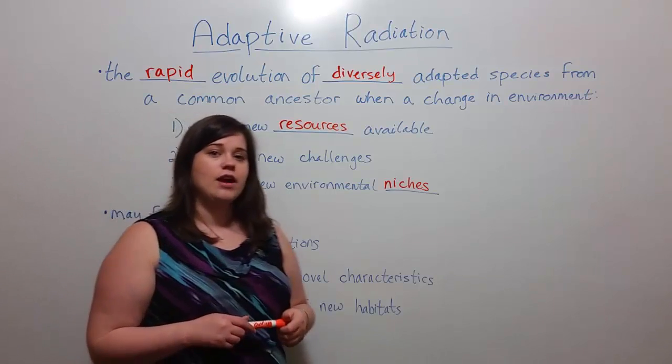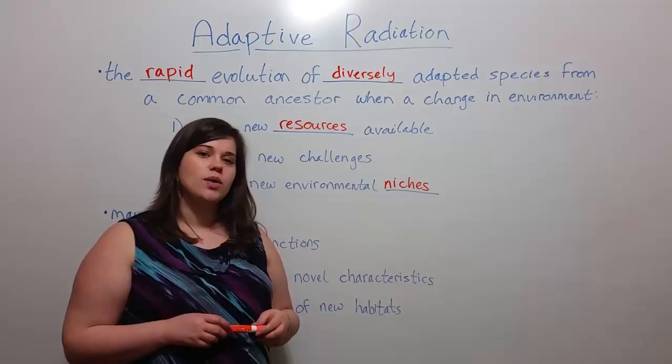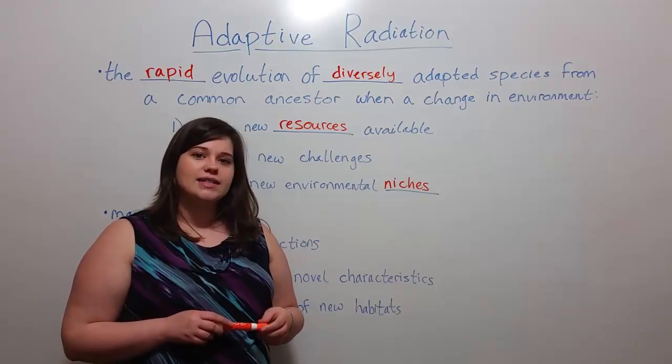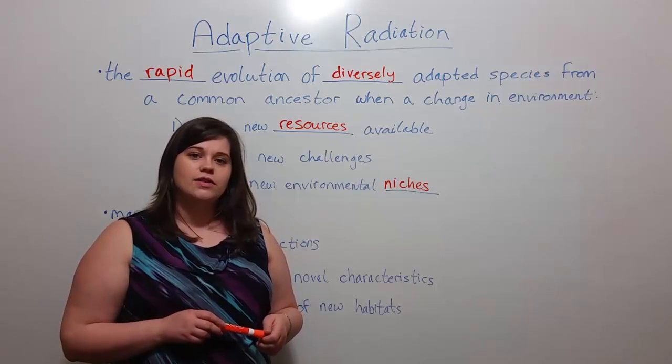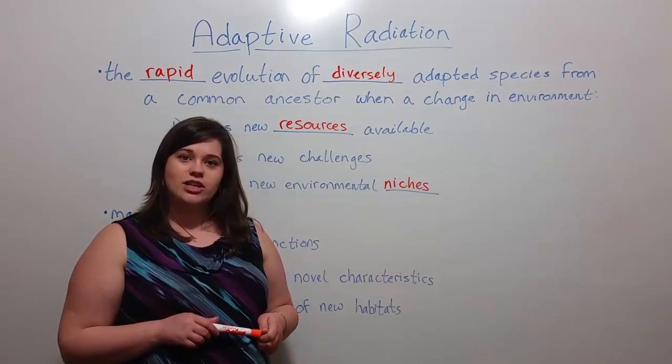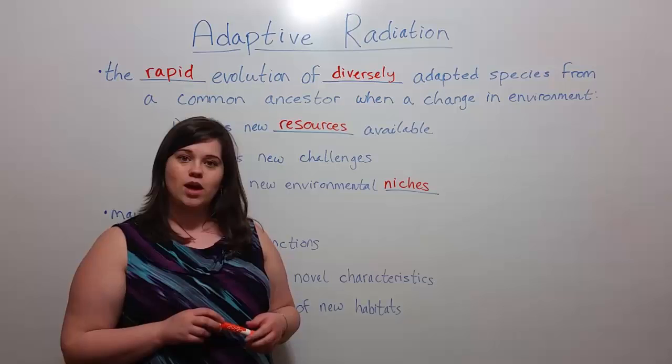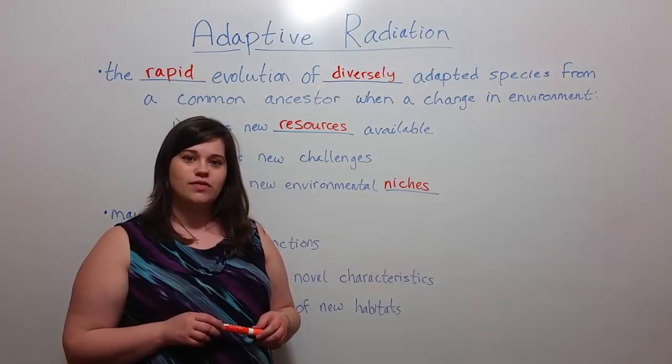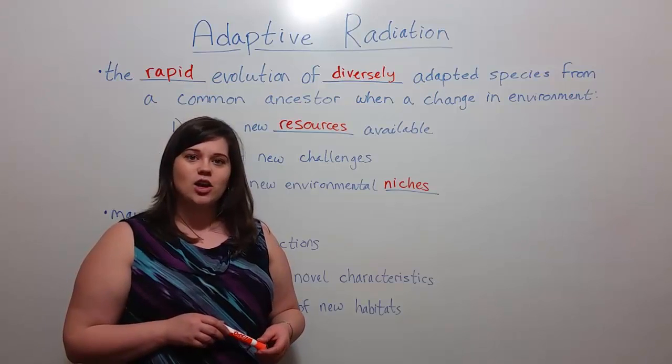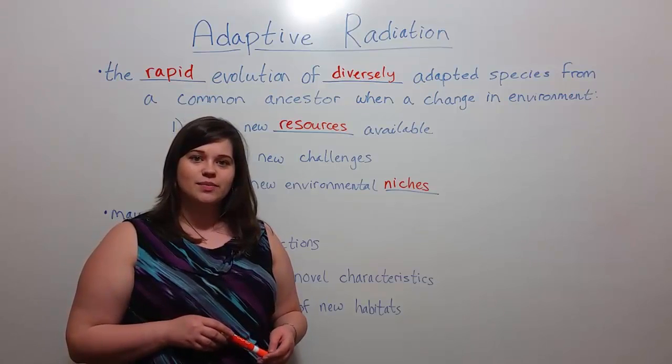So the take-home point with adaptive radiation is the evolution of new species that is very rapid, resulting in many new species with quite a lot of diversity because of changes that occur in environments. That is the end of today's discussion about adaptive radiation. Thank you for watching Biology Professor, and I hope you learned a lot.